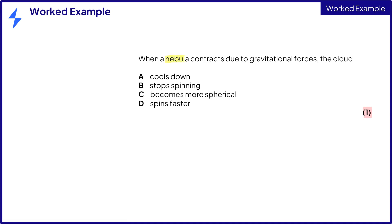When a nebula contracts due to gravitational forces, the cloud cools down, stops spinning, becomes more spherical, or spins faster.